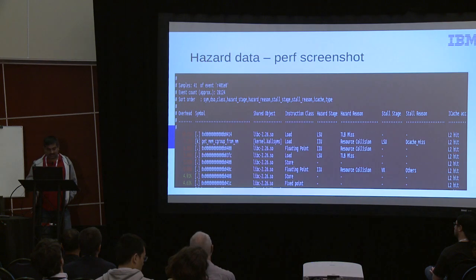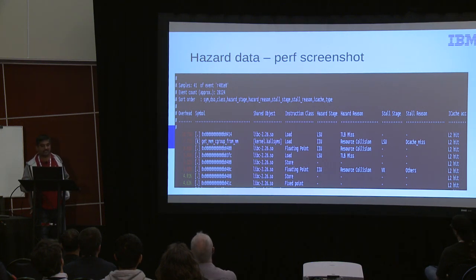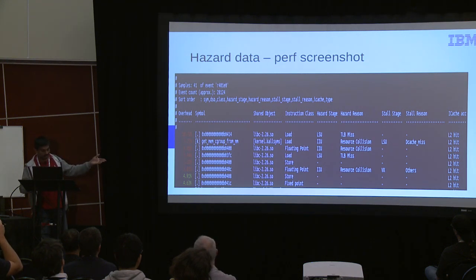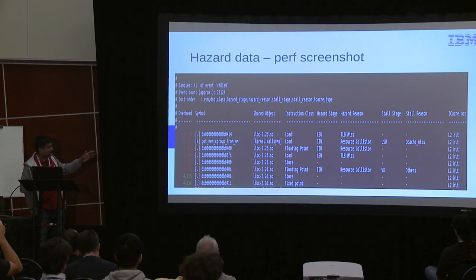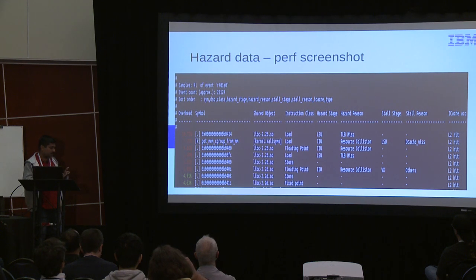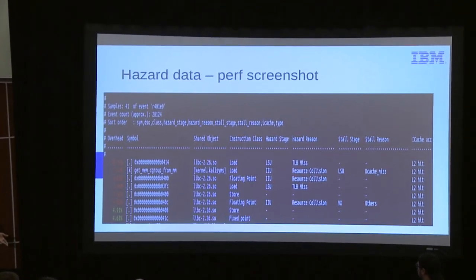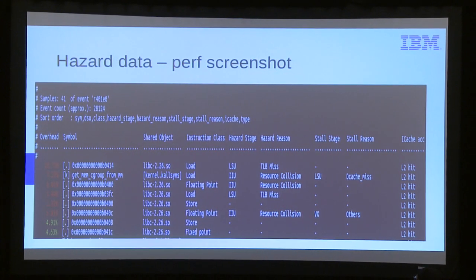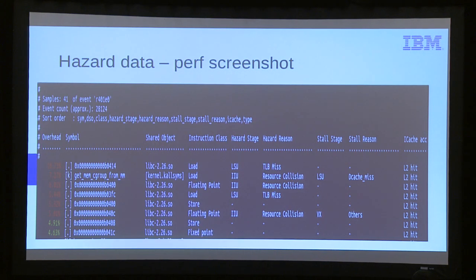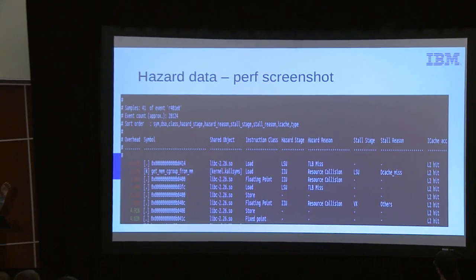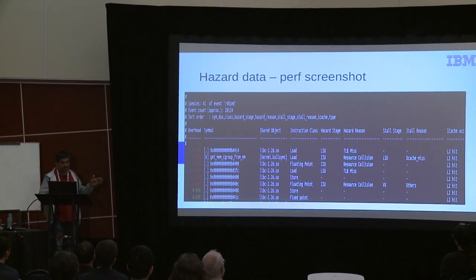A sample implementation in Power collects hazard data from a small workload, ensuring the same instruction doesn't have multiple hazards or appear twice in the same record file. New sort sequences were included to arrange by instruction class, hazard stages, reason type, and whether the instruction had any stalls and what the reason for the stall was.